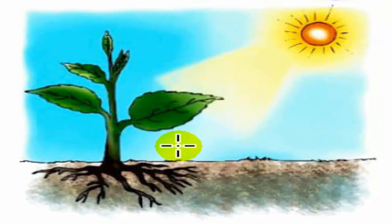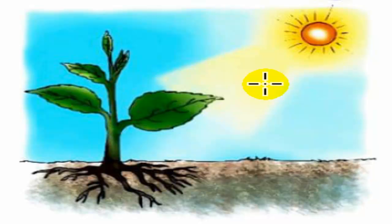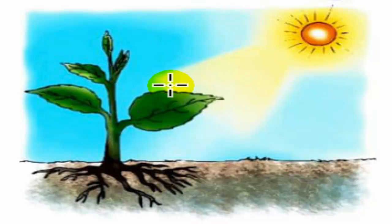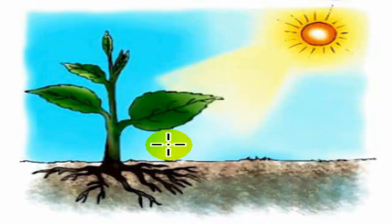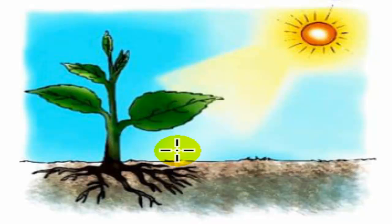Let's see this figure. This is a green plant. The green plant takes in sunlight, carbon dioxide, and water. Using these three inputs, the plant carries out the process of photosynthesis and prepares its own food. Therefore, plants like these are known as producers.